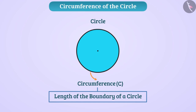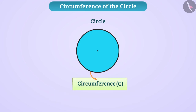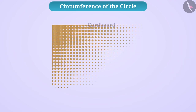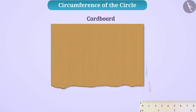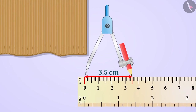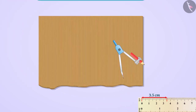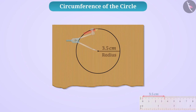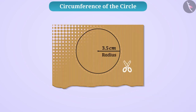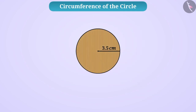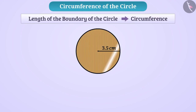Let us perform an interesting activity to know how to find the circumference of a circle. Take a cardboard and draw a circle of radius 3.5 cm on it. Cut the drawn circle. Can you tell how we can find the length of the boundary of the circle, i.e. its circumference?